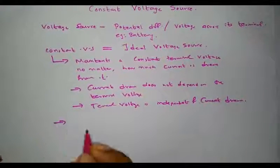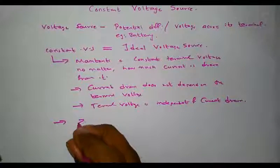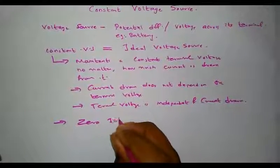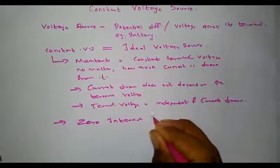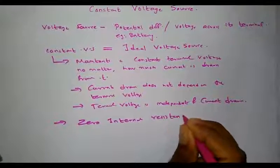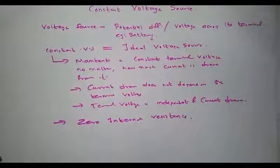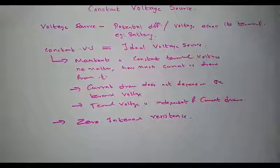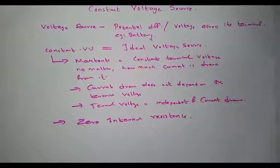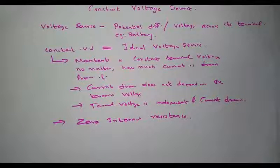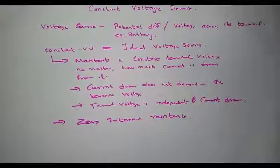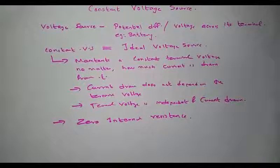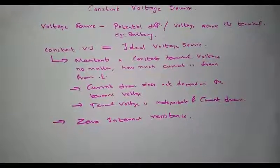A constant voltage source is considered to have zero internal resistance. That is, when the current drawn from the source varies from zero to infinity, the terminal voltage will remain always unaffected. Even though the current varies from a minimum to a maximum value, the voltage will always remain constant, because it has zero internal resistance.